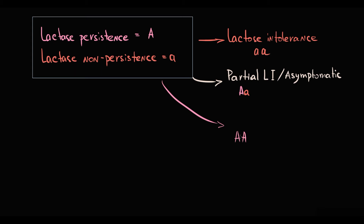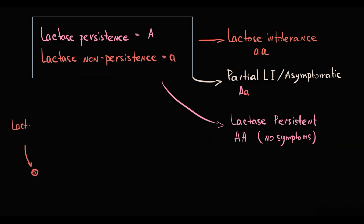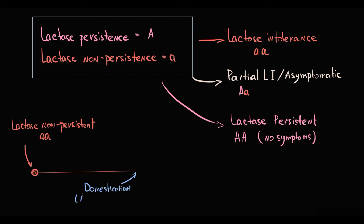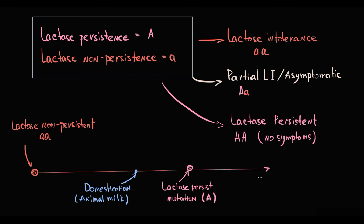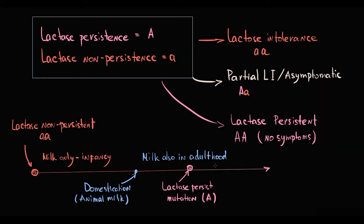Humans with two dominant alleles are lactase persistent and digest lactose extremely well with no symptoms. It has been suggested that initially all humans were lactase non-persistent. DNA analysis of Neolithic individuals who lived across Europe between approximately 5000 years BC shows that all of them were homozygous for the lactase non-persistent alleles. But with domestication of animals, a lactase persistent mutation occurred, which makes sense because the only period when humans consumed milk was during infancy. With domestication, animal milk became a new potential dietary source, and the ability to digest milk during adulthood became very useful — so this mutation was an adaptive response.